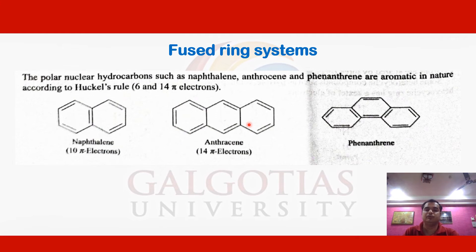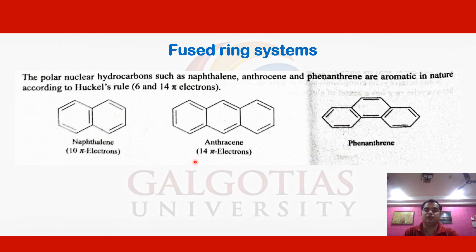Similarly, anthracene is a tricyclic fused system where three benzene rings are fused with each other. In anthracene, seven pi bonds are present, meaning 14 pi electrons. This also follows Hückel's rule — 4n+2 — since 14 is in the series 2, 6, 10, 14, 18. Therefore anthracene also has aromatic character as a fused ring system.